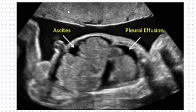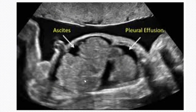This is the placenta. What you are seeing here, which is anechoic — the anechoic space — this is our amniotic fluid. You can see nicely here the insertion of the umbilical cord and the umbilicus of the fetus. If you make an assessment of the fetal abdomen, you can see these are the bowels, and you can see there is fluid in the peritoneal space — what we call ascites.